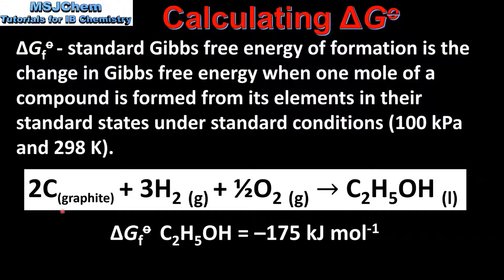So here we have the equation for the formation of 1 mole of ethanol from its elements in their standard states. So 2 moles of carbon and 3 moles of hydrogen and half a mole of oxygen form 1 mole of ethanol. The standard Gibbs free energy of formation value for ethanol is negative 175 kJ per mole.